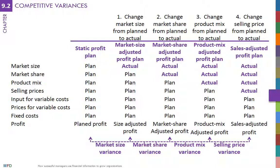These variances provide detailed insights into why the company's revenues were better or worse than expected. Because they focus on revenues and the company's performance in the market, they are called competitive variances. Some competitive variances can be estimated — for instance, market size, market share, and selling price variances can be calculated for each product, customer, customer segment, region, etc. Doing so aids the performance analysis of each performance object.